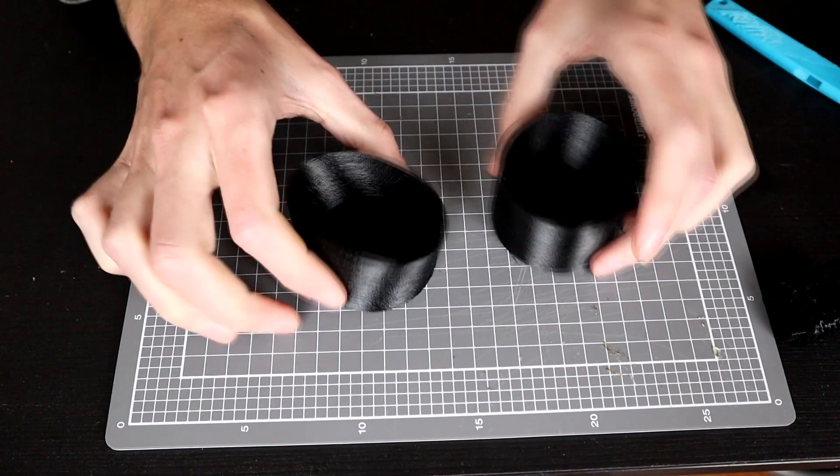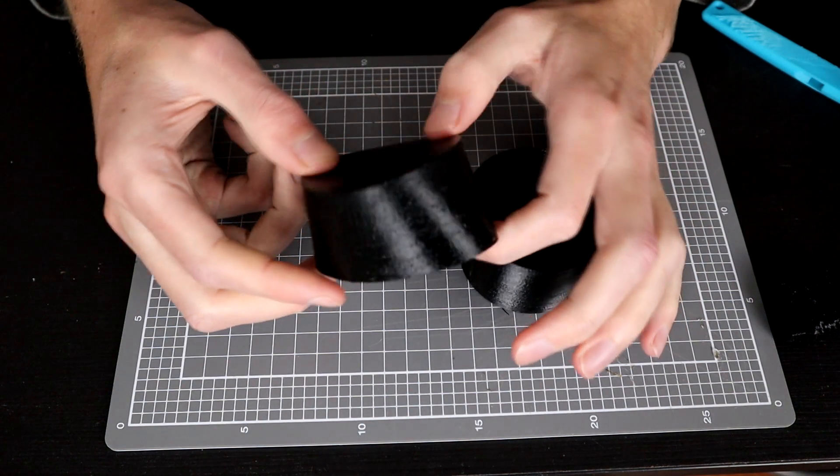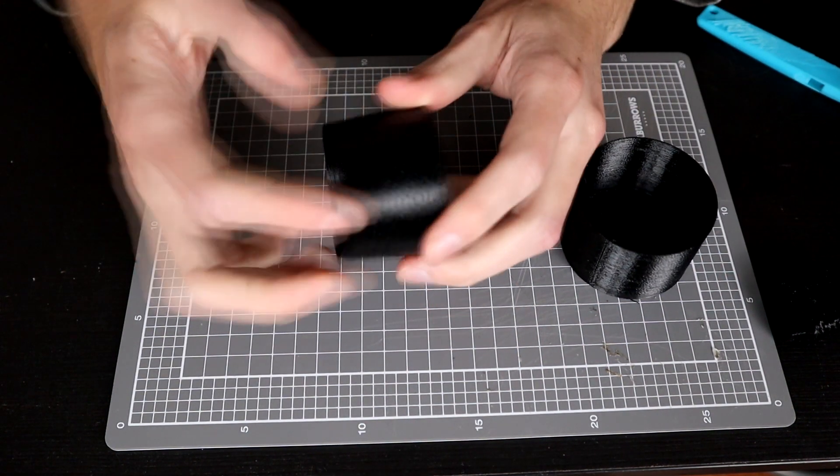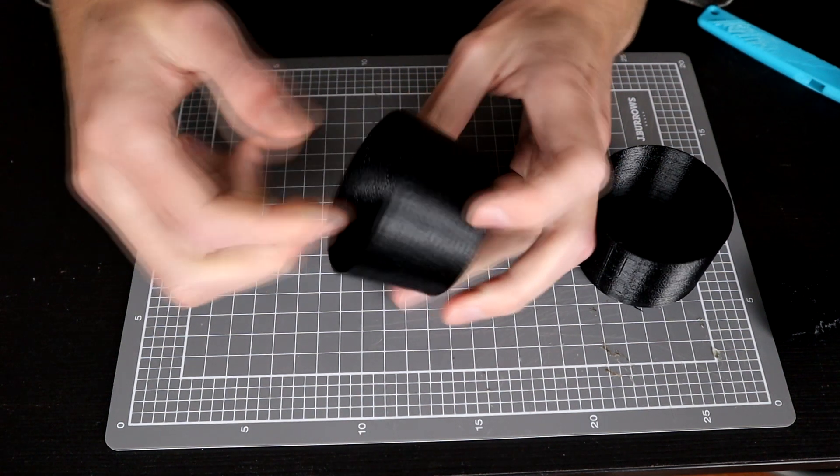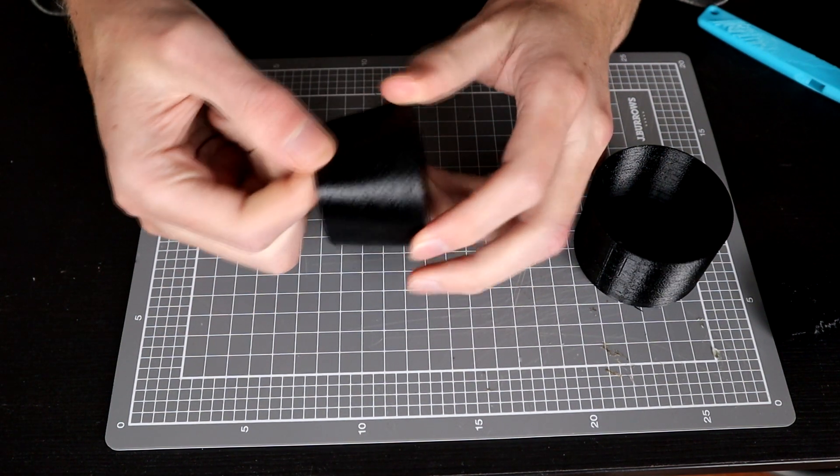So we're gonna try something different. I printed some cups up. This one is a vase mode print. For those of you who've done some 3D printing, it is a single layer that just kind of wraps all the way around. It's also got some holes in it.